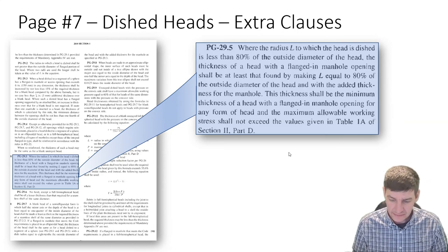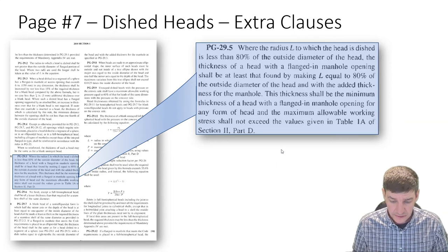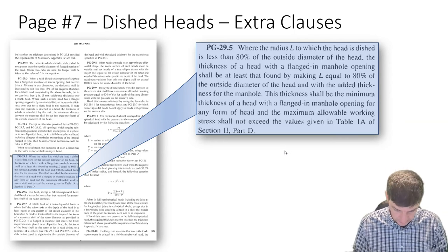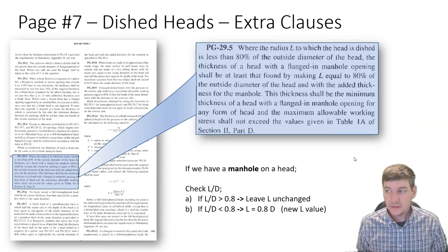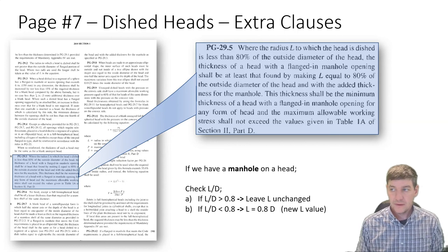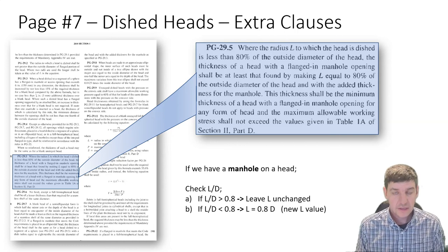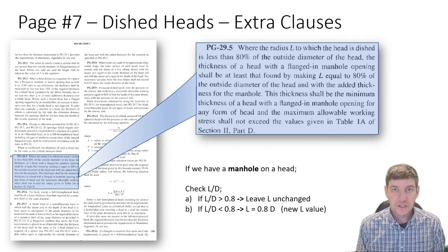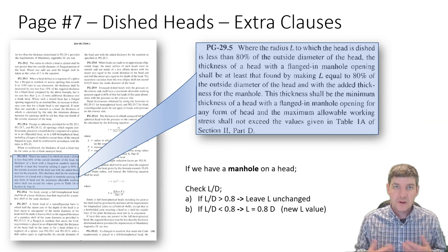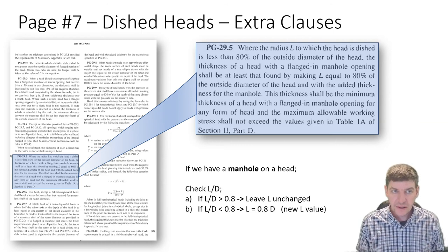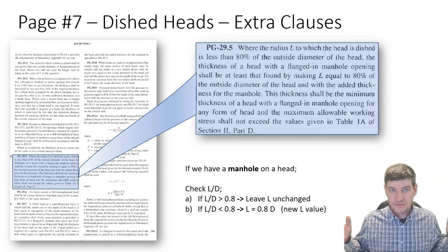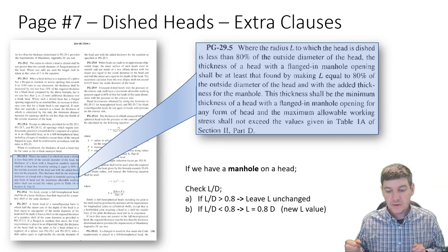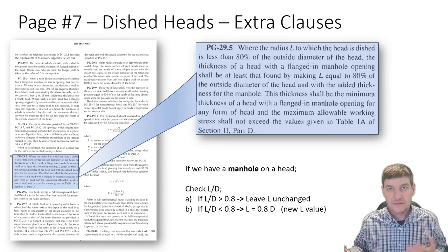At least that by making L equal to 80%. Here's how we look at this: if we have a manhole on a head, a dished head in this case, we want to check this L to D ratio. We're going to take the radius that it's dished (that L value) and divide it by D, the diameter of the head, and check that value.